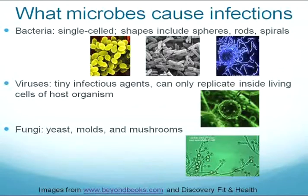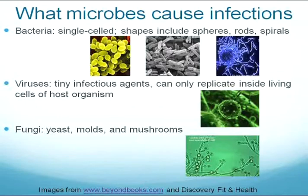The next microbe that can cause infections is a virus. These are different — they are much smaller than bacteria. They just contain the basic elements of life. As Dr. Smith talked about earlier with genes and DNA, these viruses just contain genetic material wrapped in a protein coat. And in order for them to replicate and make more viruses, they're actually required to infect a cell of an animal, a plant, or a human, and basically hijack that cell, use the machinery for making more proteins, and then turn the host cell into a virus-making factory.